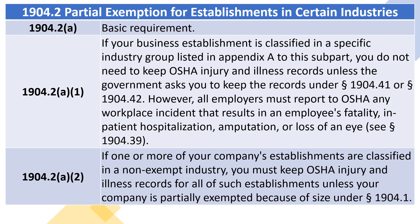1904.2(a)(2): If one or more of your company's establishments are classified in a non-exempt industry, you must keep OSHA injury and illness records for all of such establishments unless your company is partially exempted because of size under Section 1904.1.